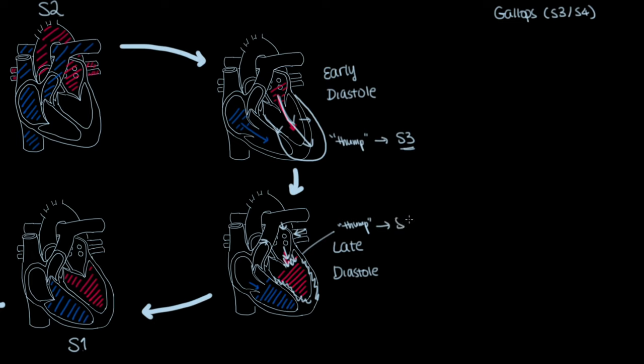Because this occurs late in the diastolic phase, the sound comes right before the S1 of the next cardiac cycle. An example of a condition that causes an S4 sound would be heart failure with preserved ejection fraction, also known as diastolic heart failure.